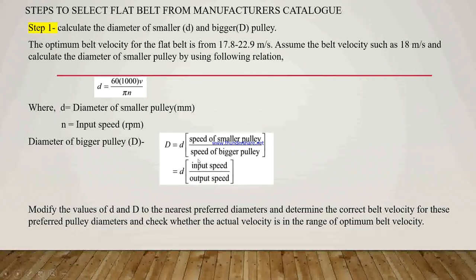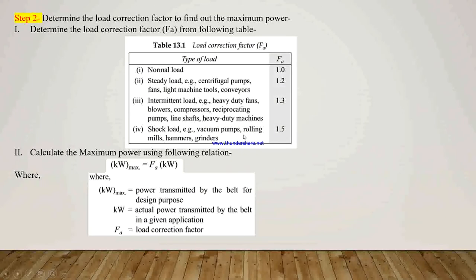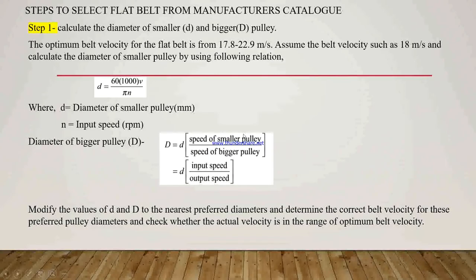After calculating the diameter of both pulleys, we have to modify the values of diameter to the nearest preferred pulley diameter. After that we have to determine the correct belt velocity for this preferred pulley diameter, and check whether the actual velocity is in the range of optimum belt velocity, which is 17.8 to 22.9 meter per second.